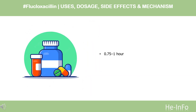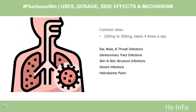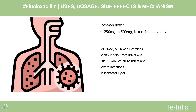The half-life of flucloxacillin is 0.75 to 1 hour. The usual dose is 250 mg to 500 mg taken 4 times a day. For children, the dose may be lower. Try to space your doses evenly throughout the day — for example, first thing in the morning before breakfast, at around midday before lunch, late in the afternoon before tea, and at bedtime.